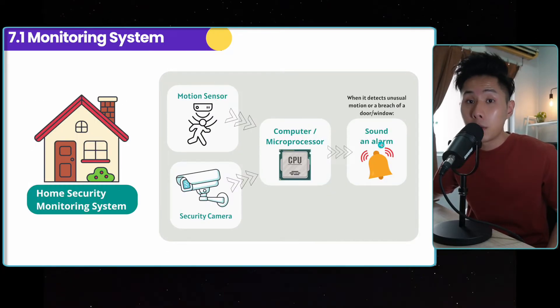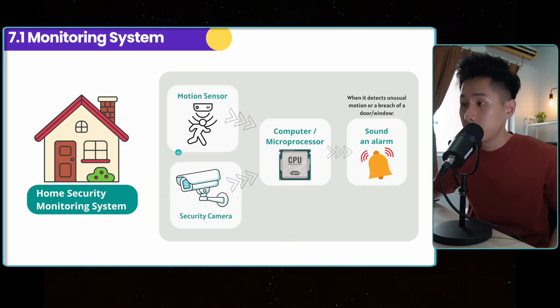So let me give you some examples of where you can find a monitoring system. The home security monitoring system. It has motion sensor, security camera, sending data to the microprocessor, and then sounds an alarm if they detect any motion or breach of a window or door.